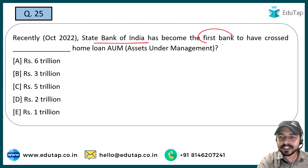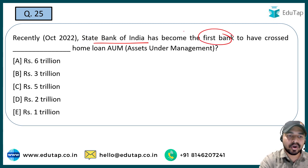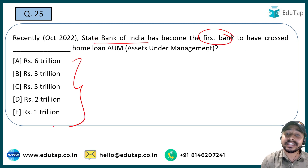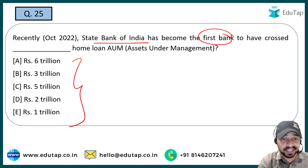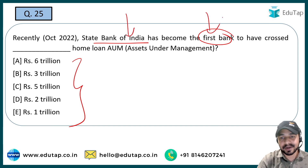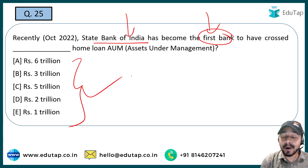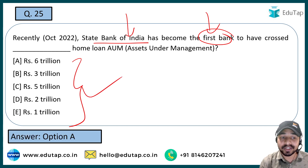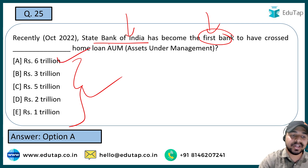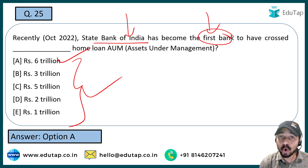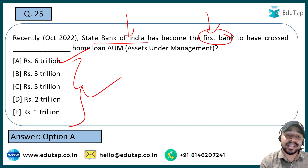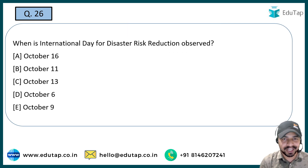State Bank of India has become the first bank to have crossed ₹6 trillion in home loan assets under management. This record is held by State Bank of India — the first bank to cross this particular amount of home loan asset under management.